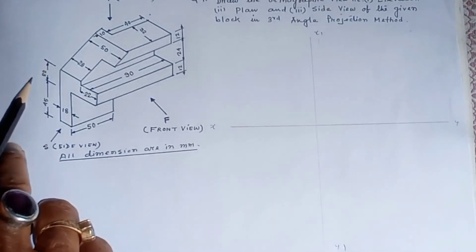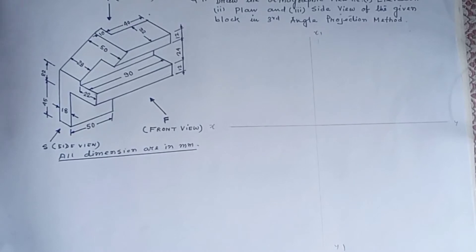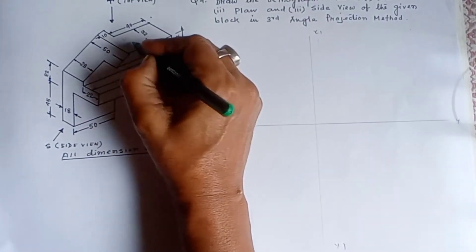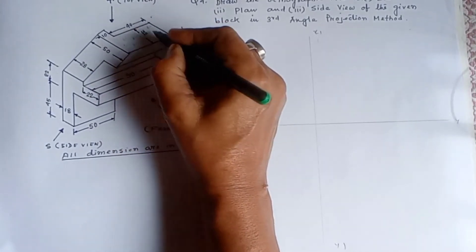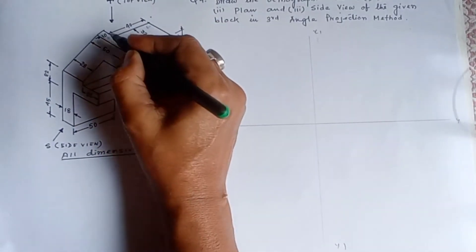We will draw the left side, and on the left side it is well. We will show the right side and we will draw the right side. Here we are looking at green color. Then we will draw the right side.